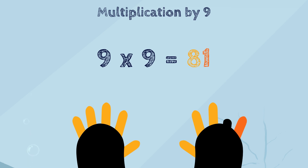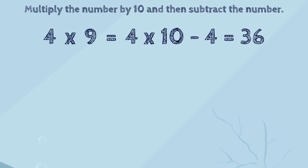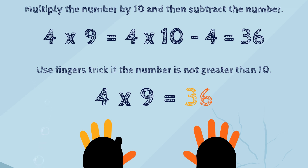Please remember that this trick can only be used to multiply numbers up to ten times nine. It can't be used for bigger numbers like eleven times nine or twelve times nine. If the number you are multiplying nine by is bigger than ten, you can use the first trick. As always, you should remember that the order in which you multiply the numbers does not change the answer, so it doesn't matter if the nine is the first or the second number. The tricks work either way.